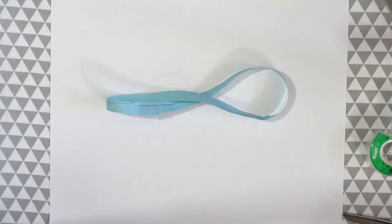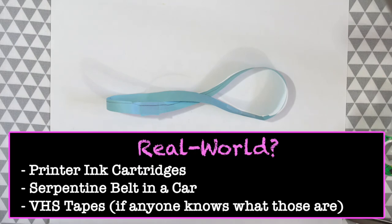So in case you're wondering like okay that's cool but what does that have to do with anything? This shape is actually found in the real world and has real uses. So it's found in all the places you see right here. It's found in printer ink cartridges, serpentine belts and a car which I didn't even know about because I don't know much about cars. But apparently it's under the hood and relates to the engine. And it's also in VHS tapes if anyone remembers or knows what those are.